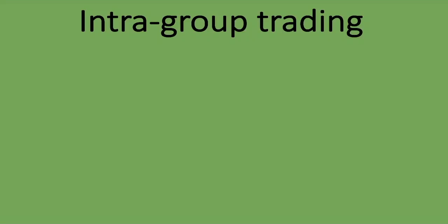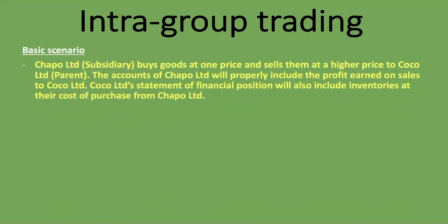Here's a basic scenario: Chapel Limited, being a subsidiary, buys goods at one price and sells them at a higher price to Coco Limited, which is its parent company. Both are within the same group. Chapel Limited's accounts will properly include the profit earned on sales to Coco Limited. Meanwhile, Coco Limited's statement of financial position will include inventories at their cost of purchase from Chapel Limited — the price at which Coco bought them from the subsidiary.